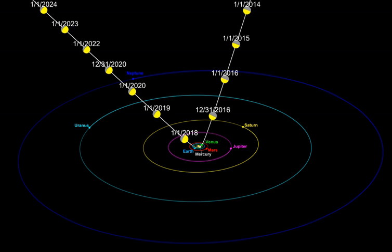An interstellar comet can probably, on rare occasions, be captured into a heliocentric orbit while passing through the solar system. Computer simulations show that Jupiter is the only planet massive enough to capture one, and that this can be expected to occur once every 60 million years. Comets Machholz 1 and Hyakutake C/1996 B2 are possible examples of such comets, as they have atypical chemical make-ups for comets in the solar system.